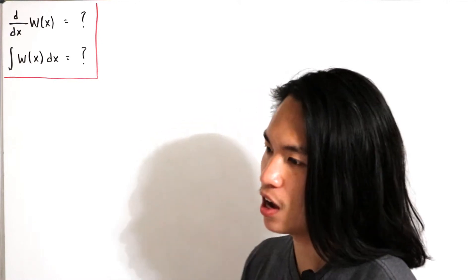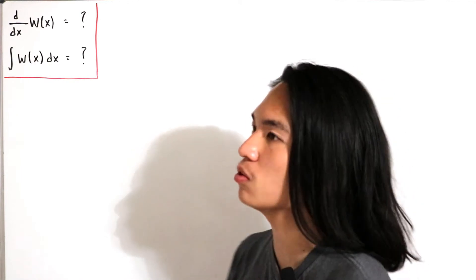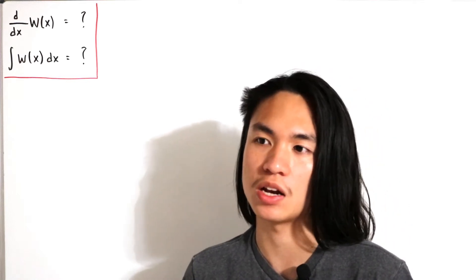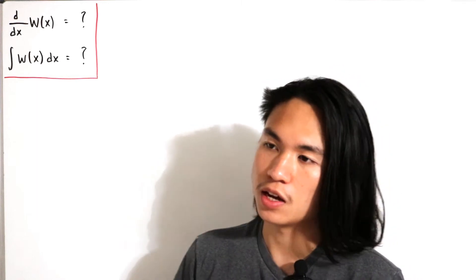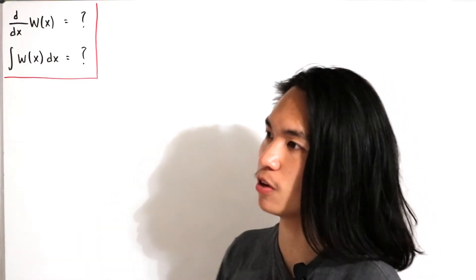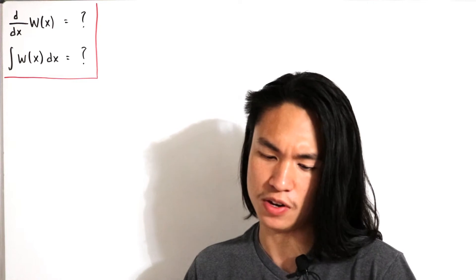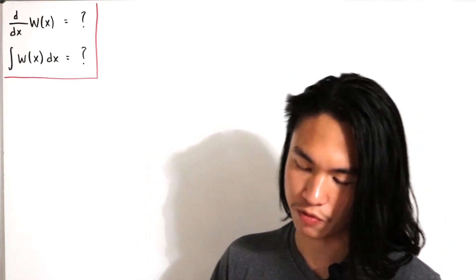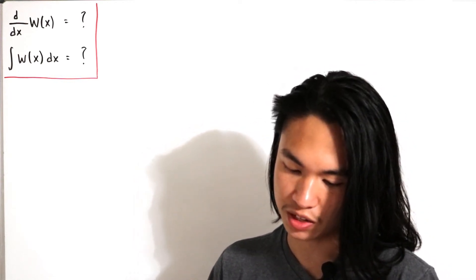The whole point of this video is to calculate the derivative and the integral. One thing to note is that the Lambert W relation cannot be expressed in terms of elementary functions. An interesting application is in combinatorics, specifically for enumerations of trees, and in biochemistry — particularly enzyme kinetics — where it appears in the open-form solution for the time-course kinetics of Michaelis–Menten kinetics.